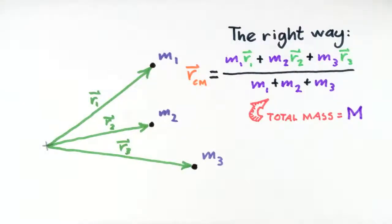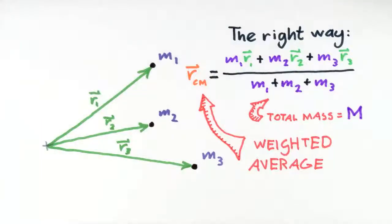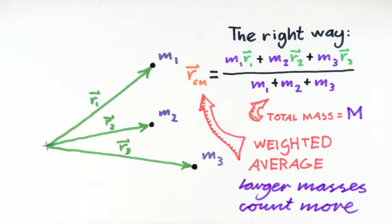A few things to note here. First, this is an example of an average we call a weighted average. Note here the word weight doesn't mean gravitational force. The word weight here means that some of the quantities in the average count more than others. Here we give more value to the positions of big masses when we are finding the average.